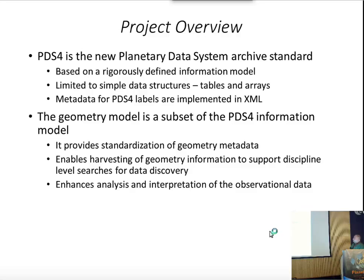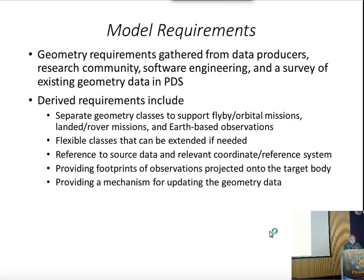The geometry model is a subset of the information model. Previously in PDS-3, geometry data has been anywhere from absent to very well defined in datasets. Sometimes it's in the labels, sometimes it's in an index file. Some datasets like Omega from Mars Express and CRISM from MRO have backplanes where they define geometry for every pixel in an image. We believe our approach will provide standardization of what metadata for geometry goes in the PDS labels, enabling more consistent harvesting of geometry information to support search tools for data discovery and enhance the ability to analyze and interpret observational data.